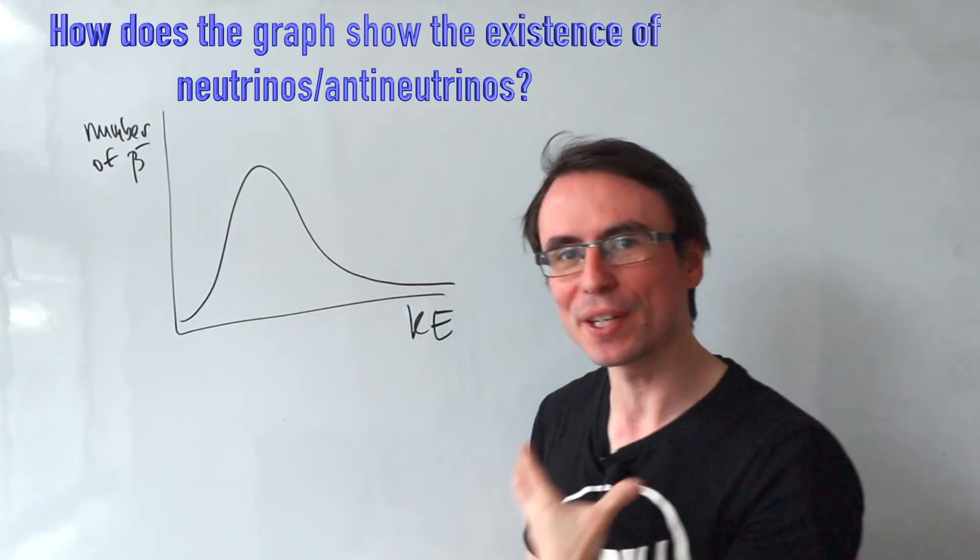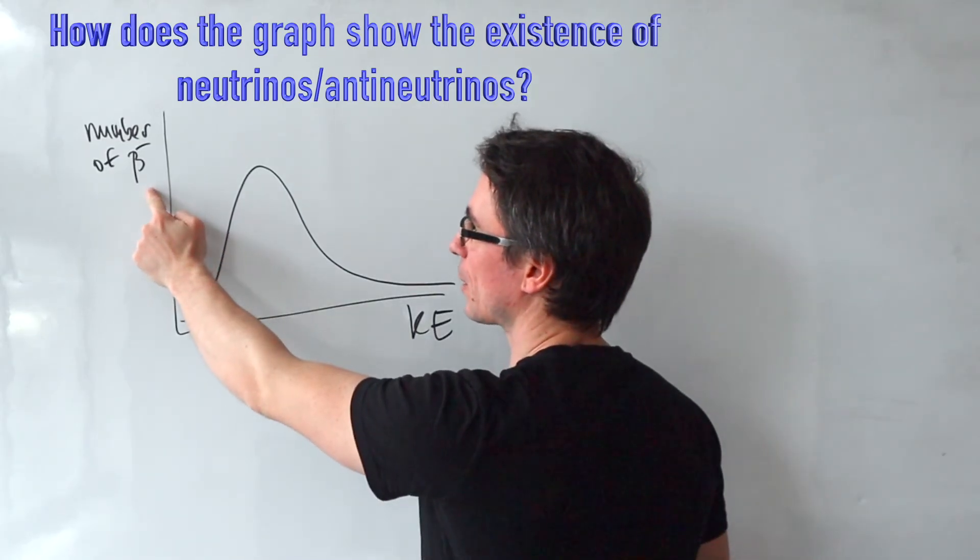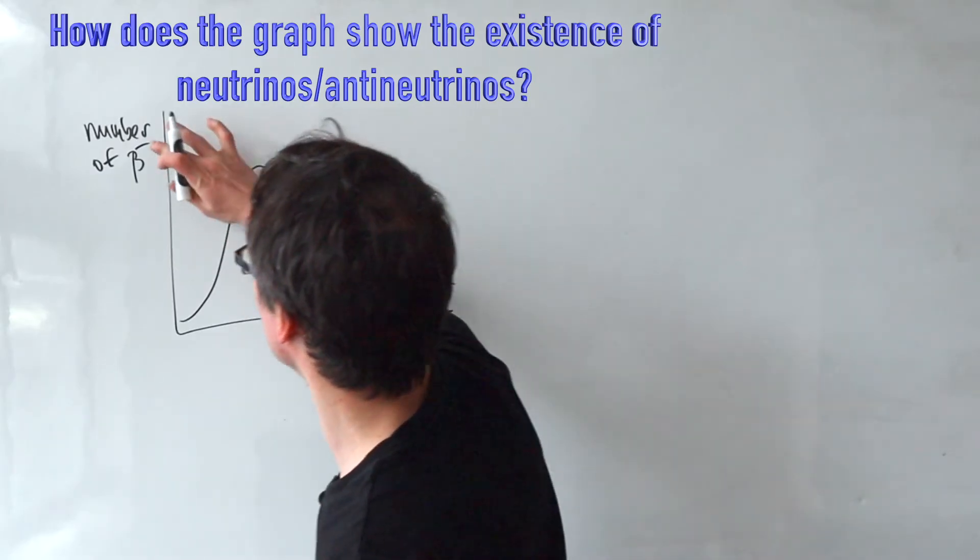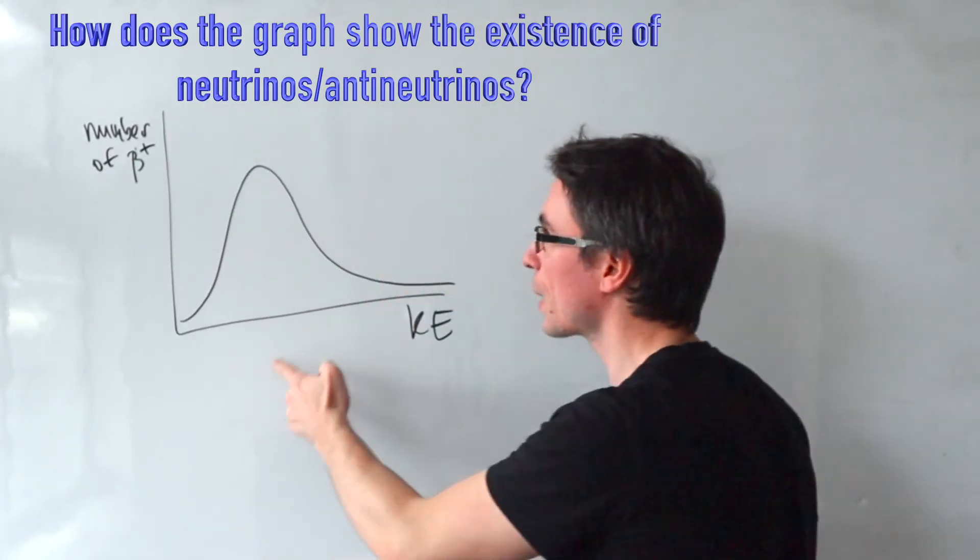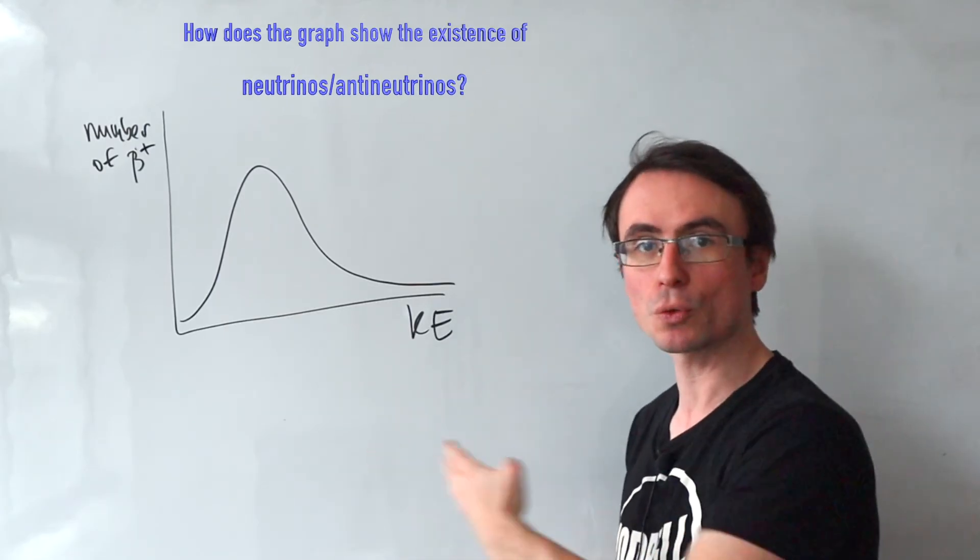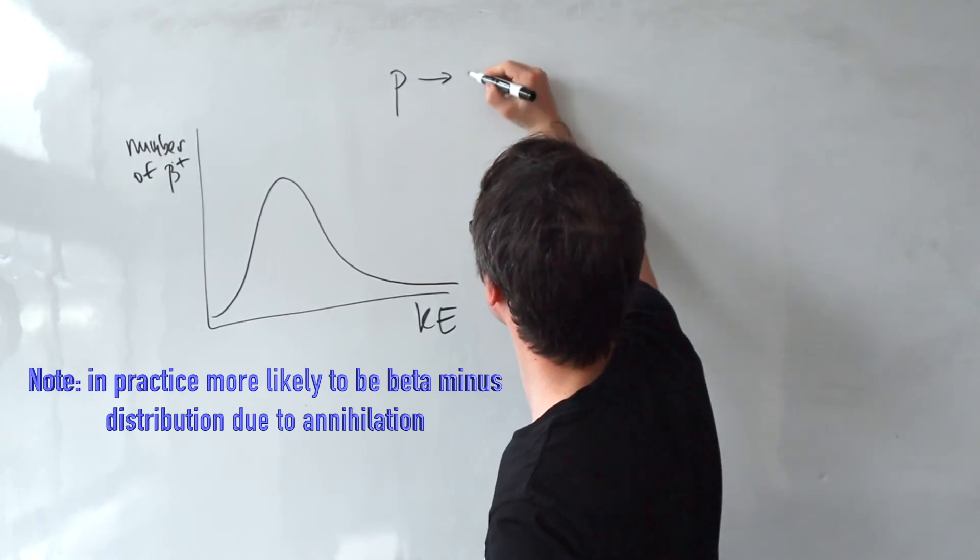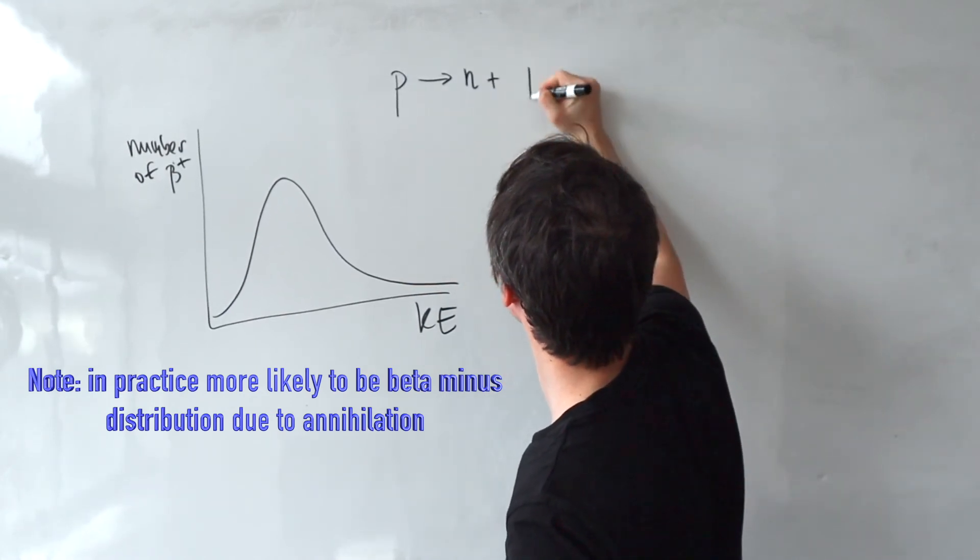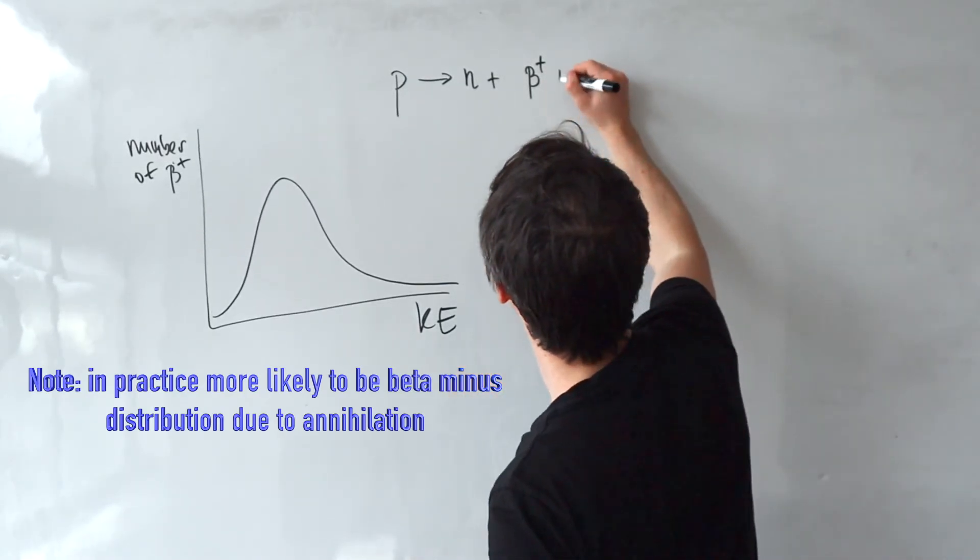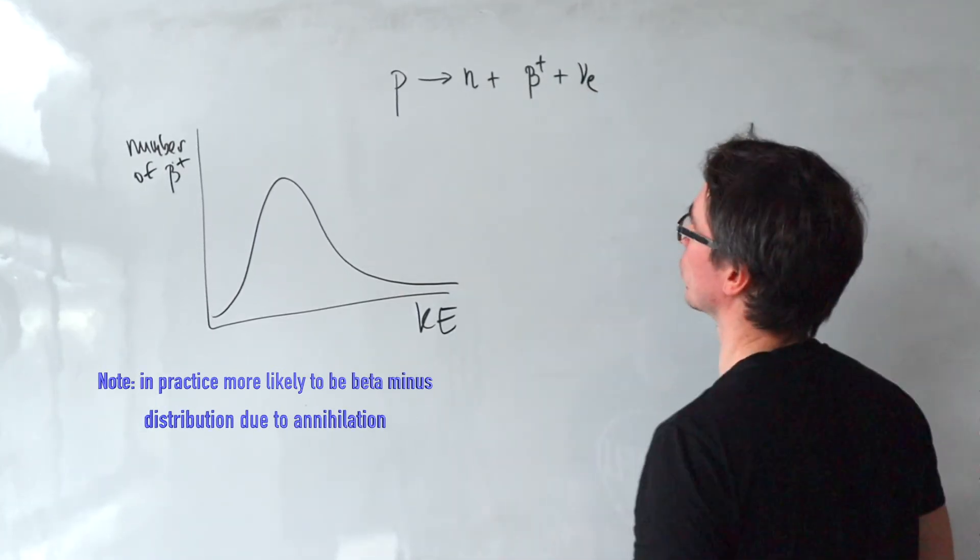Now, how does this graph infer for the existence of yet another particle, which in the case of the beta minus, it will be the anti-neutrino. If this here is the distribution of, let's say, beta plus particles, it will be the existence of the neutrino. In beta plus decay, we have a proton, which turns into a neutron, then we get a beta plus particle, which is just a positron, plus yet another particle, which is the electron neutrino.